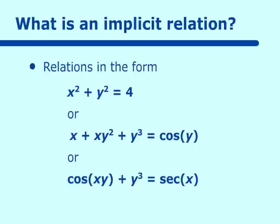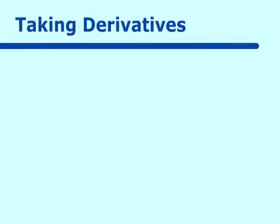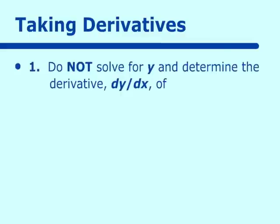The first problem we are going to work with is x squared plus y squared equals 4, and we are actually going to do that in two ways. We are first going to use the implicit relation approach, and then we are going to solve for y and show how that matches the implicit method. We are going to determine dy/dx, which is very important — we could also determine dx/dy on these.